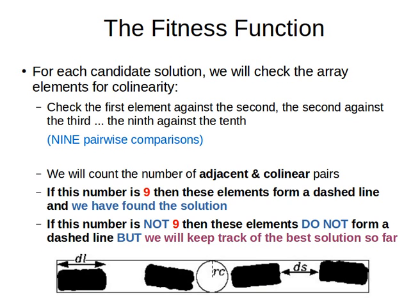Now, we will count the number of adjacent and collinear pairs. That means, if, for example, when we compare the first against the second, if they are collinear and adjacent, then that would count as one. If the second against the third are adjacent and collinear, that counts as two, and so on and so forth.